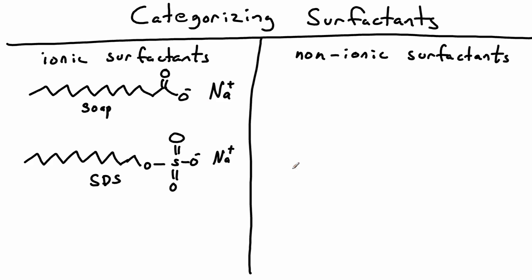A common synthetic surfactant is SDS, or sodium dodecyl sulfate. So we've got 12 carbons, there's the dodecyl, and there's the sulfate, and the sodium.